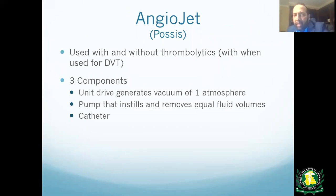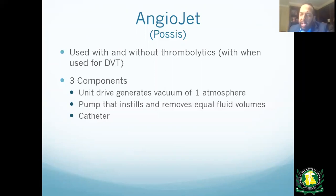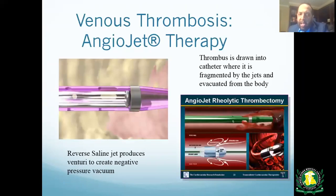The AngioJet is probably the most commonly used device. It delivers the lytic agent into the blood clot — either with thrombolytics or as a pure mechanical thrombectomy. You advance the catheter through the clot, power-pulse spray the lytic agent, and then suction out the dissolved clot. This is the most common approach used today.